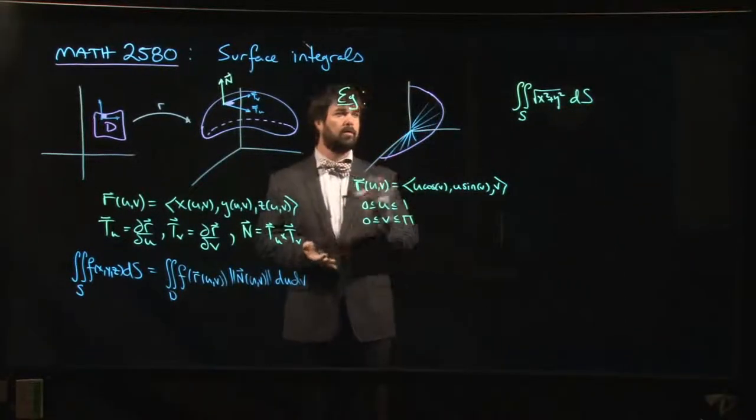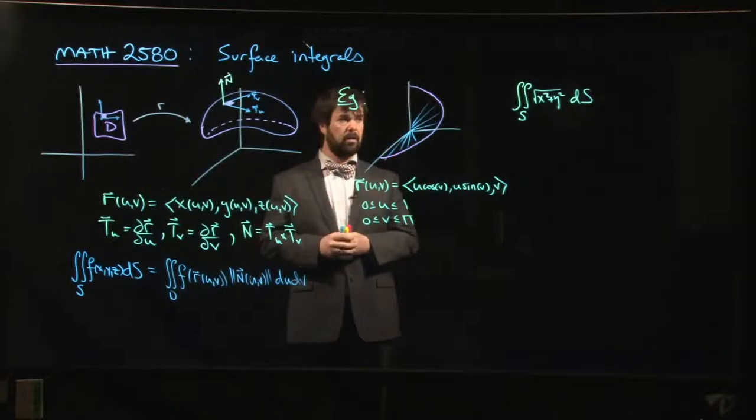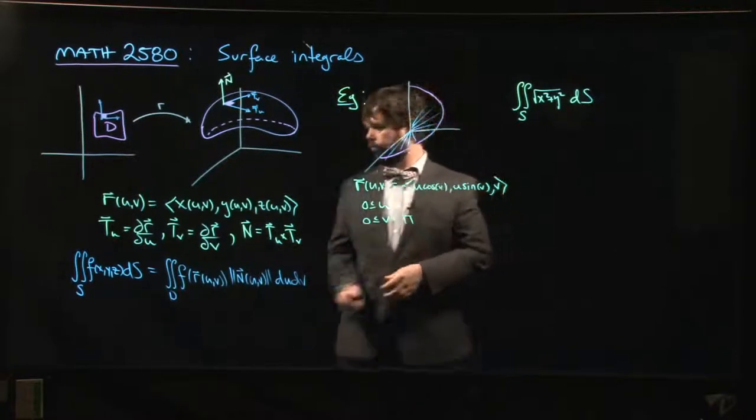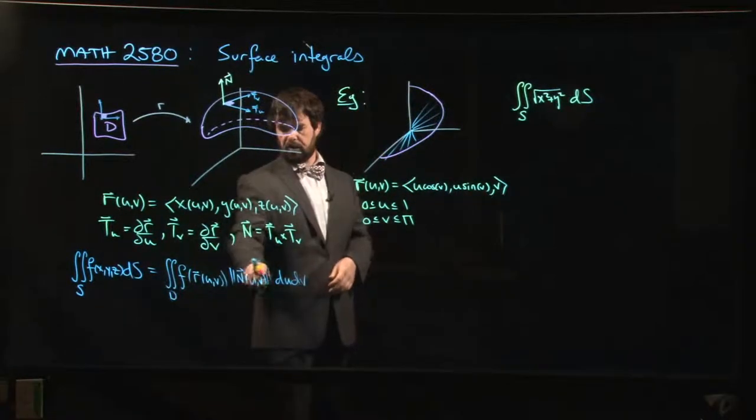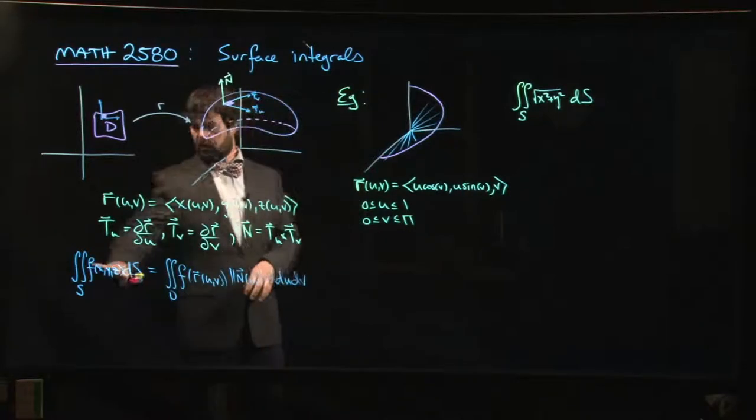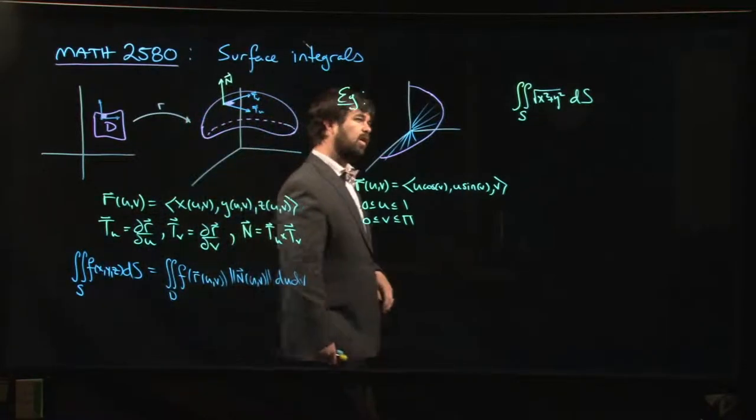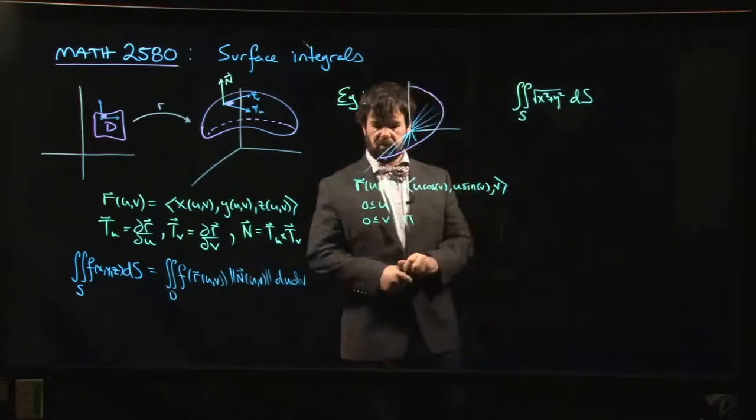All right, so we'll do one example of a surface integral for a scalar field. So our function, remember this is the formula we put up a couple of videos ago. In this case, our function of x, y, and z is this one here, square root of x squared plus y squared.